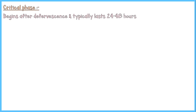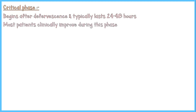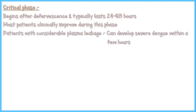The critical phase begins after defervescence and usually lasts for about 24 to 48 hours. Most patients clinically improve during this period. However, some patients with considerable plasma leakage can develop severe dengue within a few hours. In these patients, fever starts to reappear — this pattern is known as saddleback fever or biphasic fever.